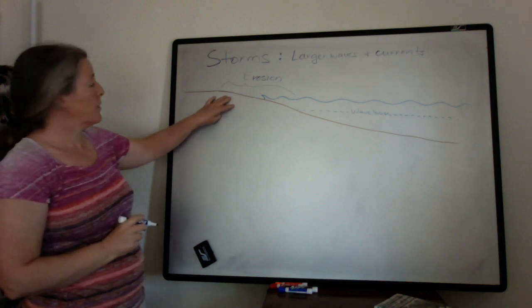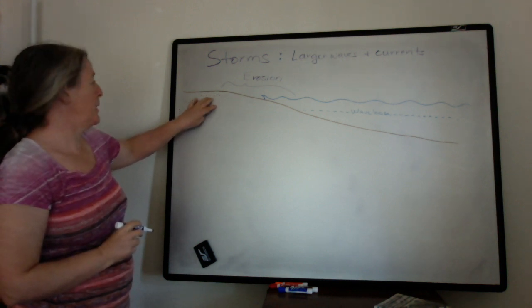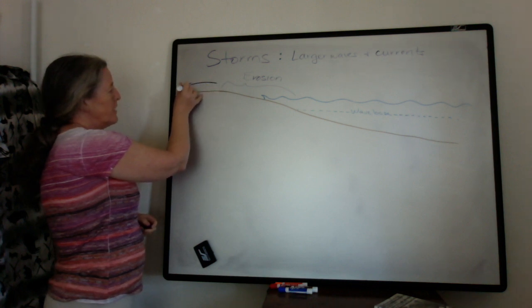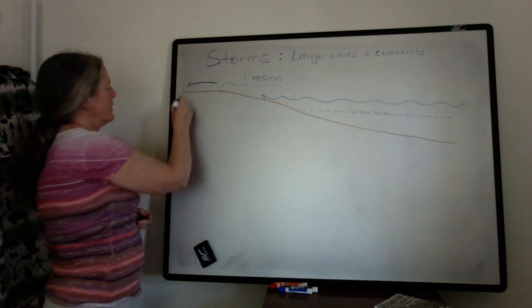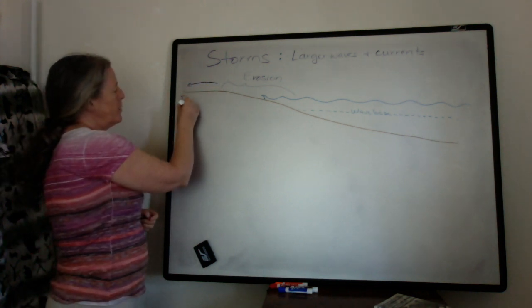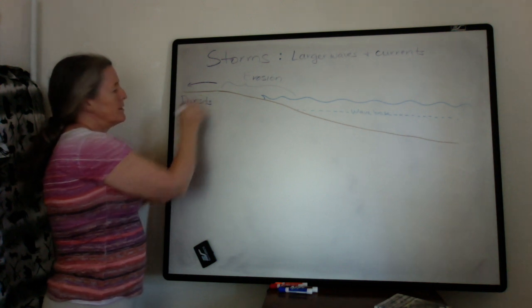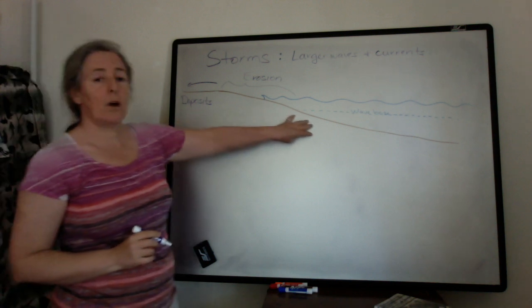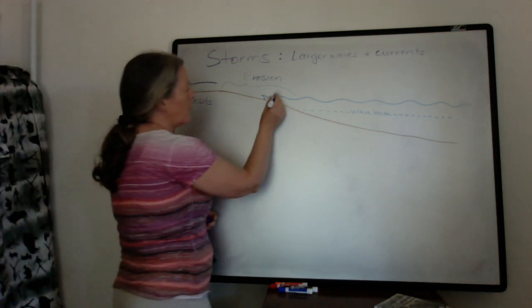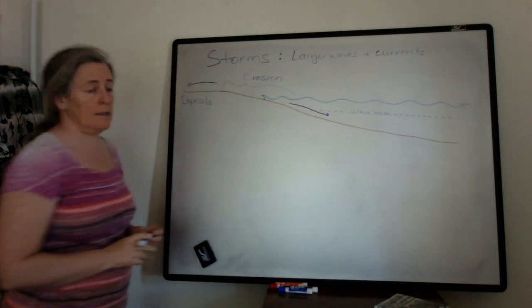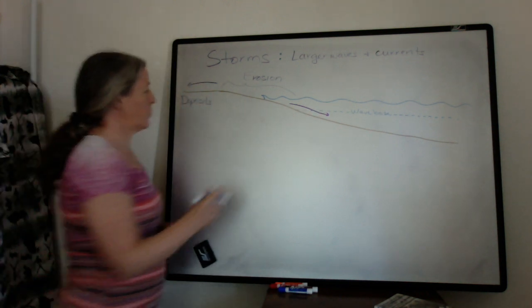If the storm is really large and washes up into these higher areas, usually the flow slows down as it gets further inland and you end up with deposits inland. And then a lot of the sediment also gets washed into the deeper parts of the ocean as well.